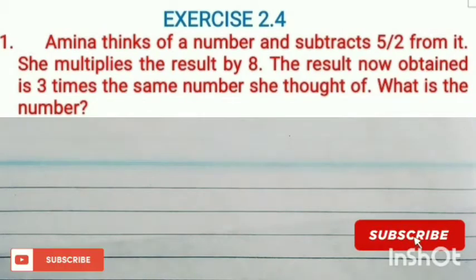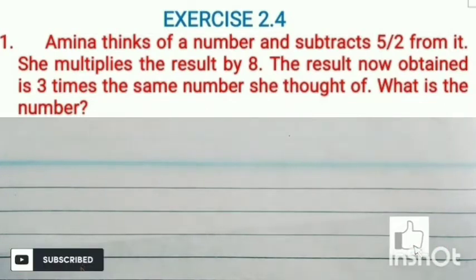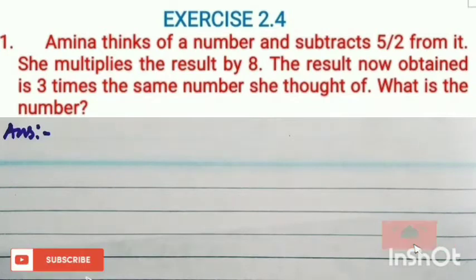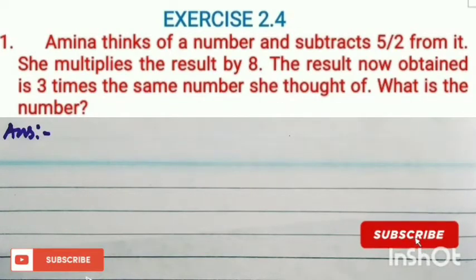Hello students. Today we are going to start exercise 2.4 - Linear equations in one variable. Question number 1: Amina thinks of a number and subtracts 5 by 2 from it. She multiplies the result by 8. The result now obtained is 3 times the same number she thought of. What is the number?